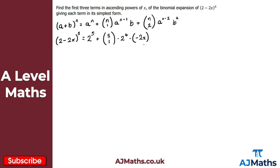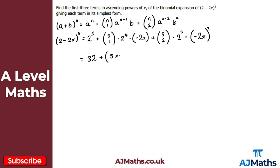Continuing: 5-choose-2 times 2^3 times (−2x) squared. Note that as we go along, the power on 2 keeps reducing. For the third term, (−2x) squared gives 4x squared. So we have 5-choose-2 times 8 times 4x squared. Now putting it all into the calculator: 2^5 is 32; 5-choose-1 is 5, times 2^4 which is 16, times (−2x) gives 5 × 16 × (−2x); and 5-choose-2 is 10, times 2^3 which is 8, times 4x squared.